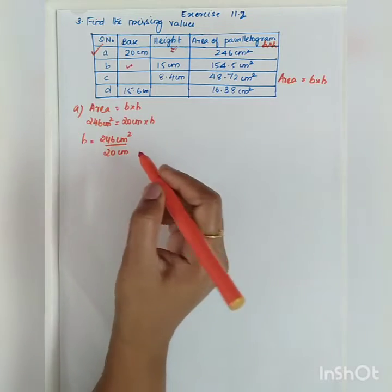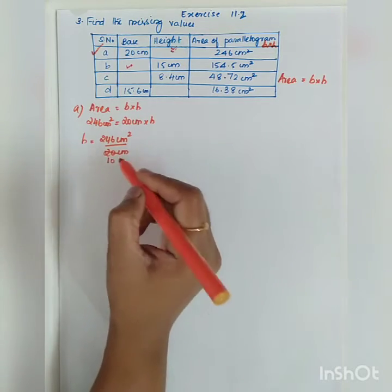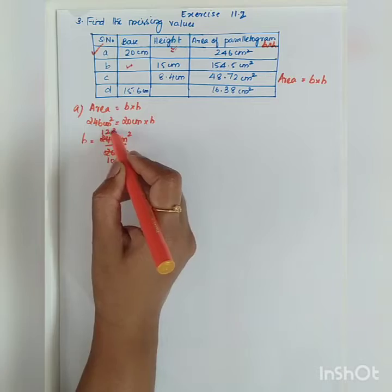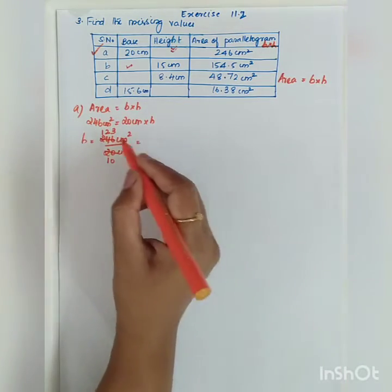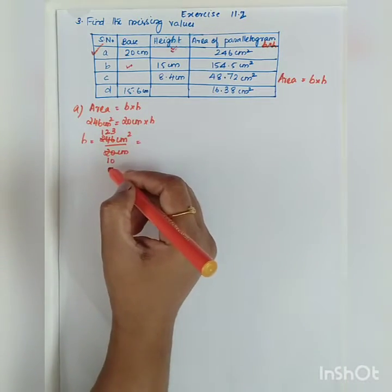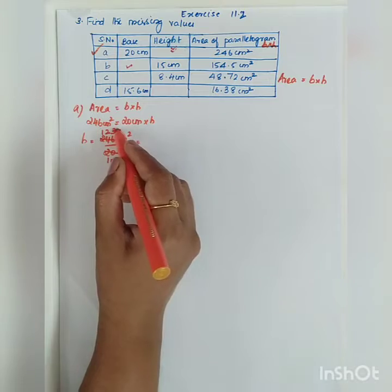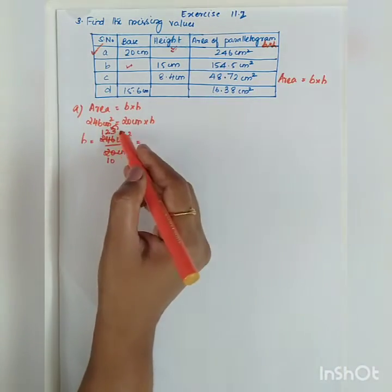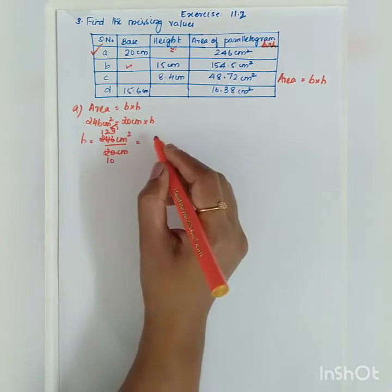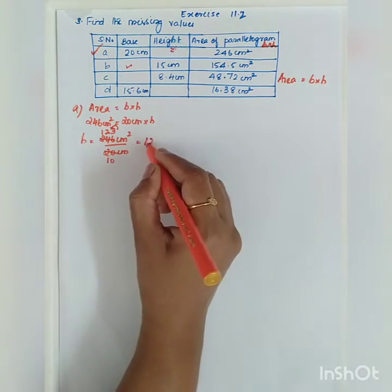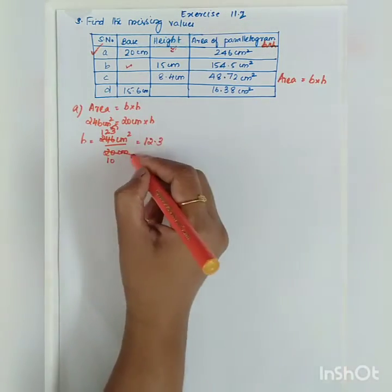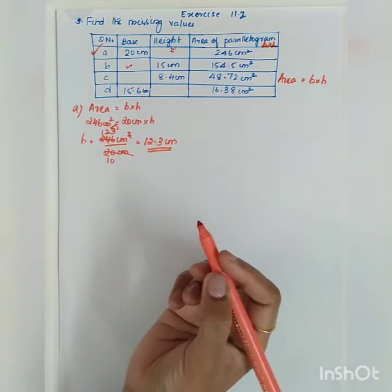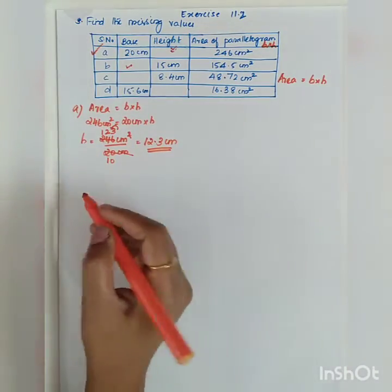We can do cancellation: 246 divided by 20 simplifies. Cancelling gives us 123 divided by 10. Anything divided by 10 means we shift one digit from the right and put a decimal point, so we get 12.3 centimeter.